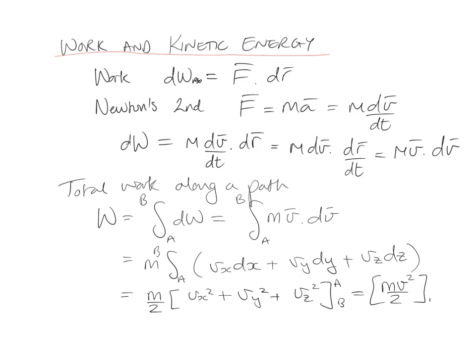which is just 1 half m vb squared minus 1 half m va squared, which hopefully you recognize as being the kinetic energy at velocity b minus the kinetic energy at velocity a. So work done is the change in kinetic energy.